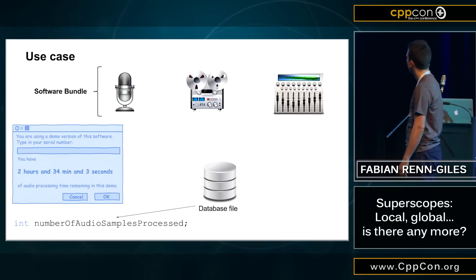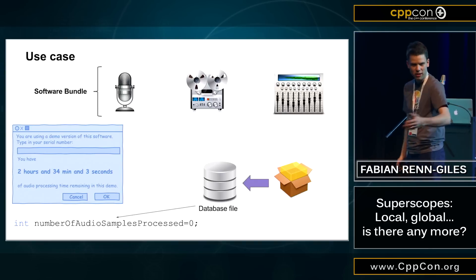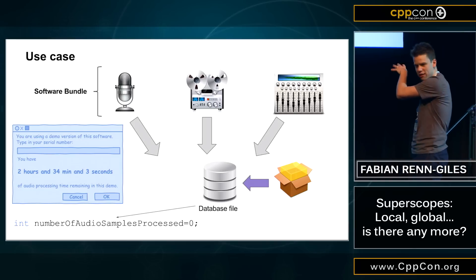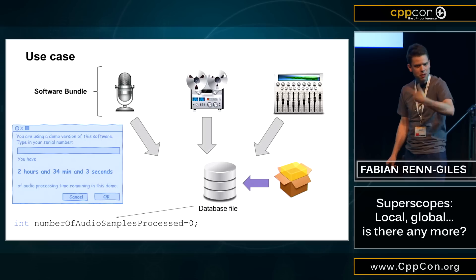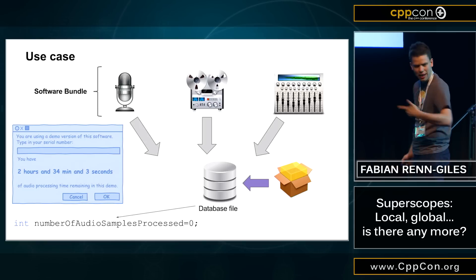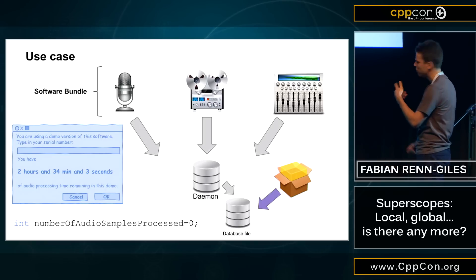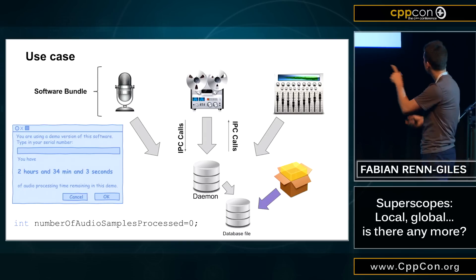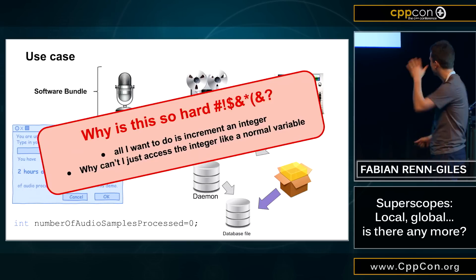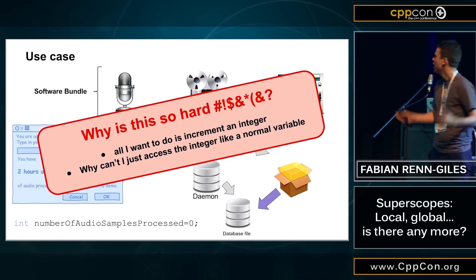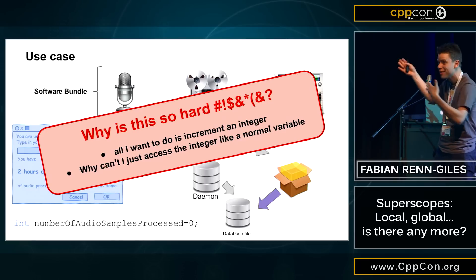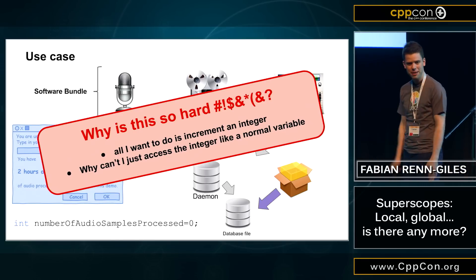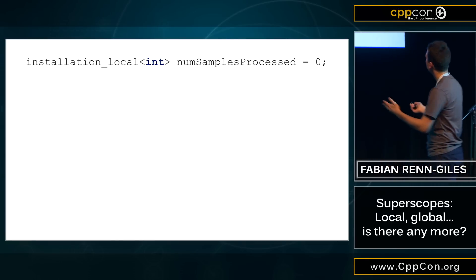The installer has to initialize it to zero, and somehow all the applications have to talk to that variable because they all have to increment that counter and check if it's done. Well, that doesn't really work because you need a daemon, and then you need IPC calls - oh my god, it's just such a mess. I mean, if you just want to increment one single variable, how hard can it be?